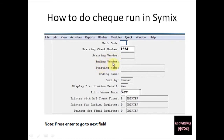Normally you would leave the Starting Vendor and Ending Vendor fields blank to include all vendors, or enter a specific vendor number in both fields if you are doing just a single check. For Sort By, the checks will be sorted by number by default, but you can change this to name if you want the checks sorted by vendor name instead.